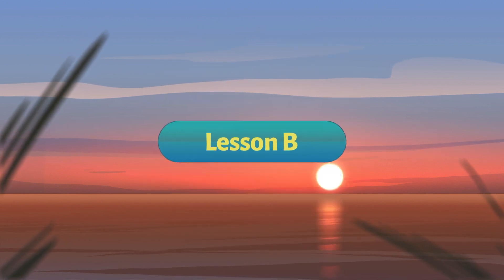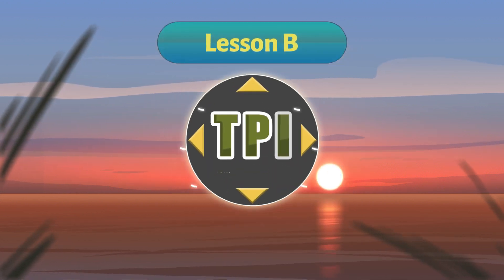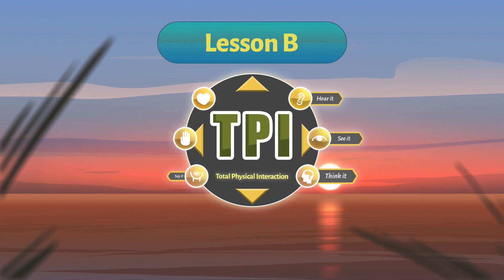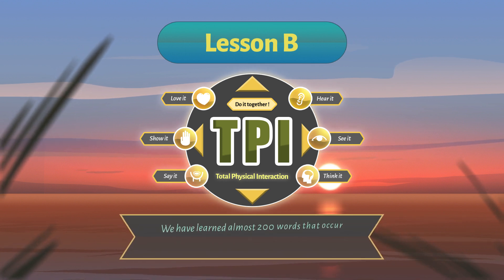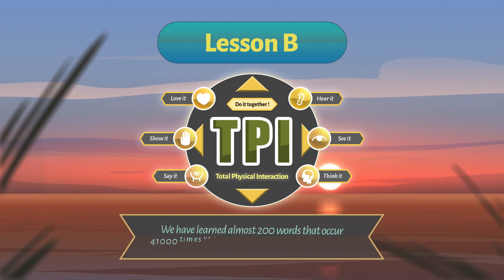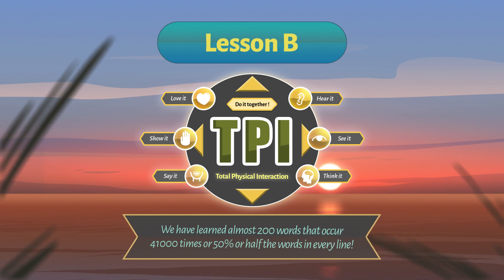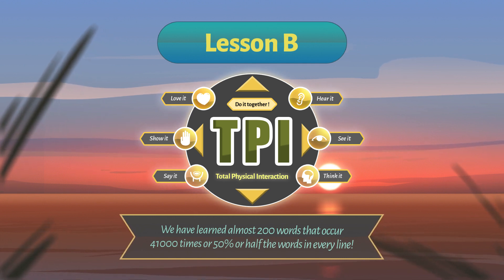Along with extremely simple grammar using TPI in our sessions — which are the B sessions like 1B, 2B, 3B — we have learned alhamdulillah almost 200 words that occur 41,000 times, covering 50% — or half the words — in every line of the Quran approximately.